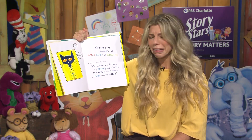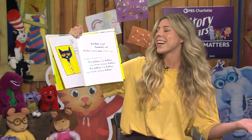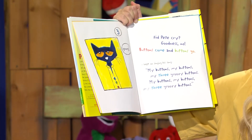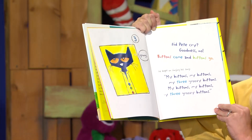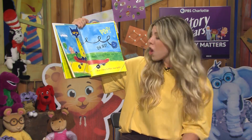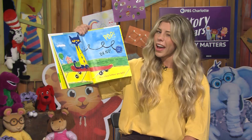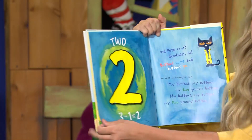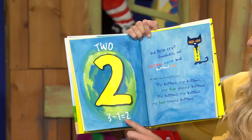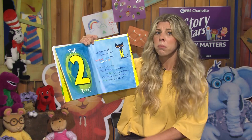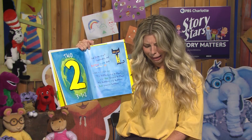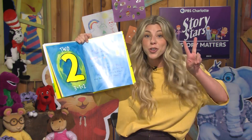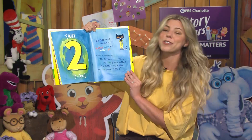Did Pete cry? Goodness no! Buttons come and buttons go. He kept singing his song: my buttons, my buttons, my three groovy buttons, my buttons, my buttons, my three groovy buttons. Oh no, another button popped off and rolled away! How many buttons are left? One, two. Let's see if we're right. Two. Three minus one equals two.